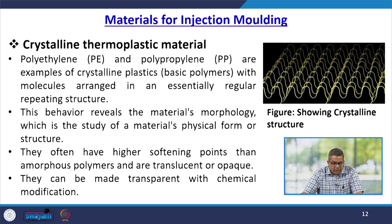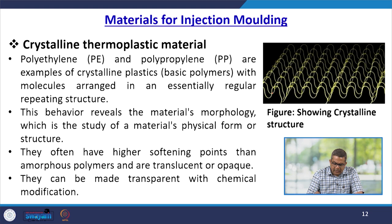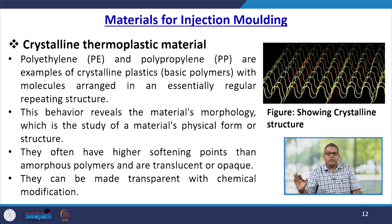Crystalline thermoplastic materials — like polyethylene and polypropylene — are examples of crystalline plastics, where the basic polymer has molecules arranged in an essentially regular repeating structure. This behaviour reveals the material's morphology, which is the study of the material's physical form or structure. Crystalline polymers often have higher softening points than amorphous polymers and are translucent or opaque, though they can be made transparent with chemical modification.